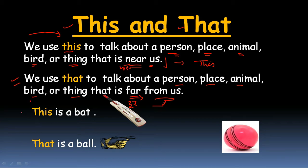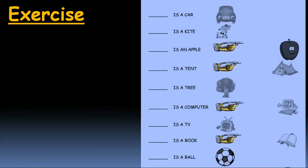Example से समझाया जाएगा, बहुत आसान है। This is a bat — नज़दीक के लिए 'this is a bat'। That is a bowl — finger use की है, 'that' दूर है, ठीक है। तो क्या use किया दूर को बताने के लिए? 'That'। पास वाली चीज़ को बताने के लिए क्या use किया? 'This'। और दूर वाली चीज़ को बताने के लिए? 'That'।